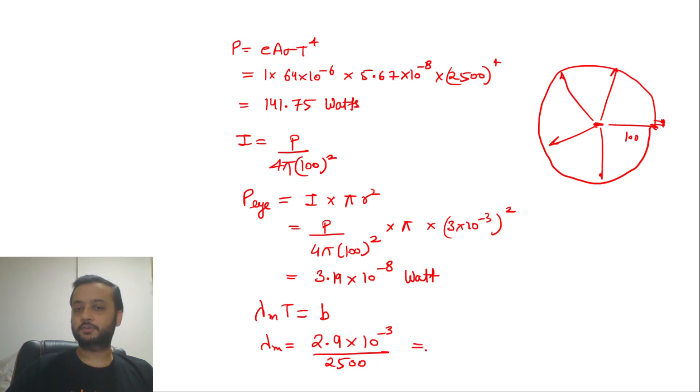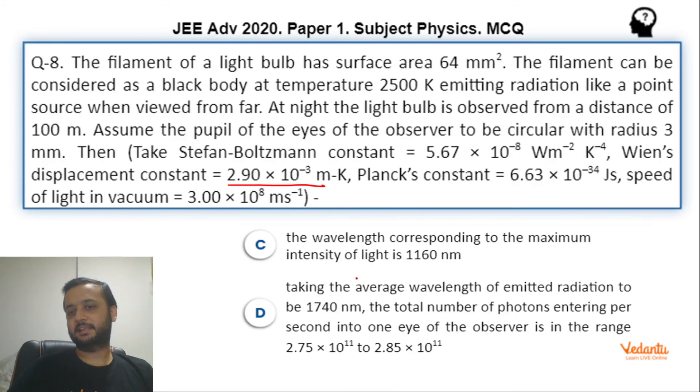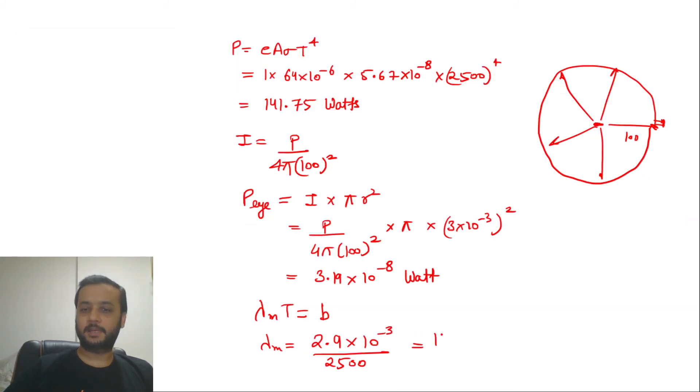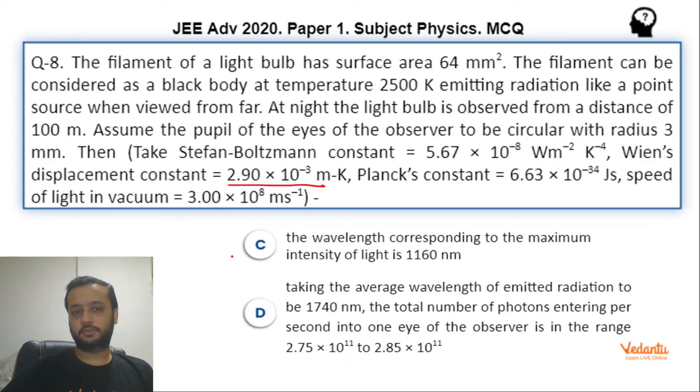2.90 × 10⁻³ divided by temperature 2500. So exactly this answer will be 1160. This option matches. Hence option C was also right.